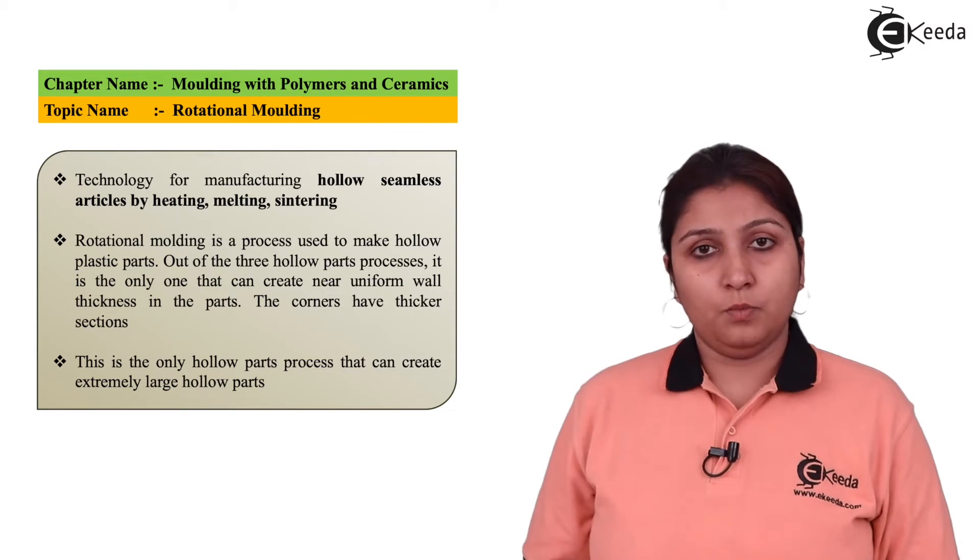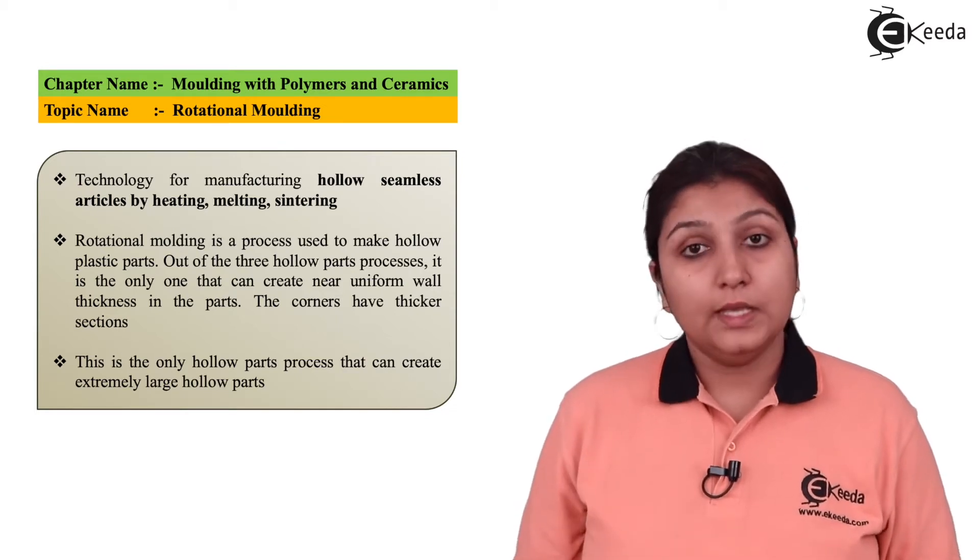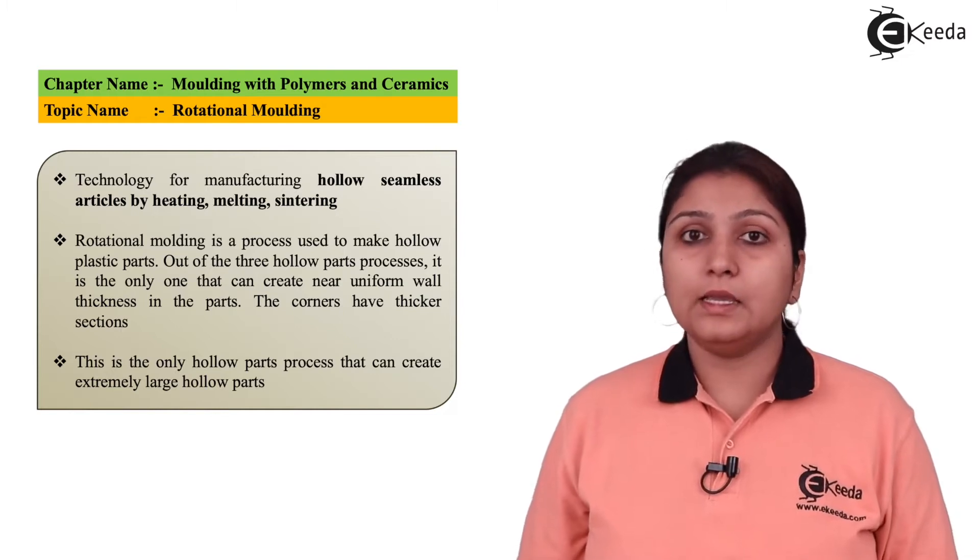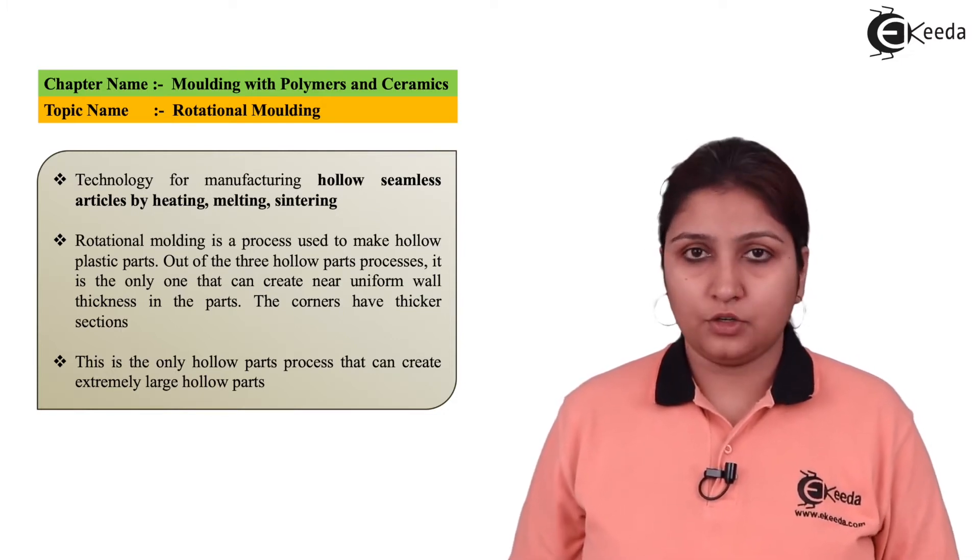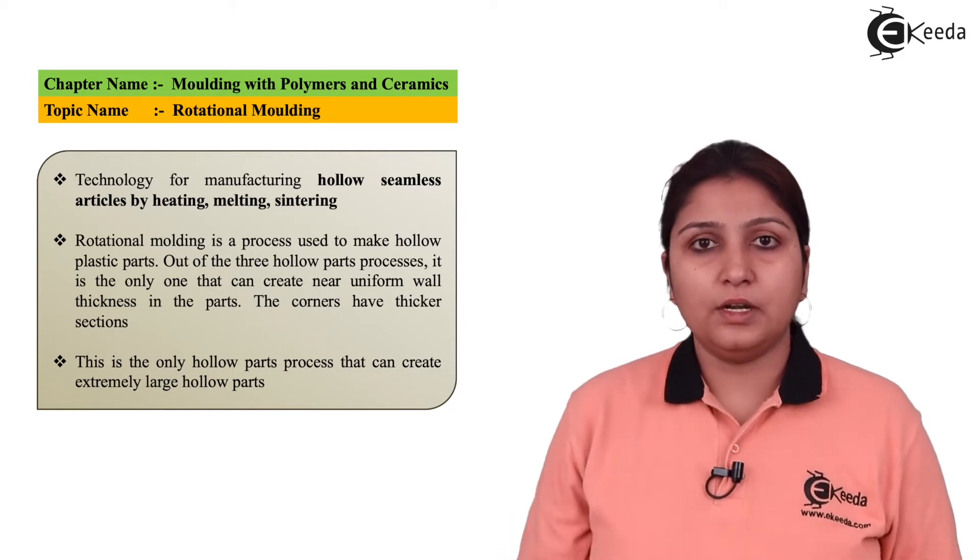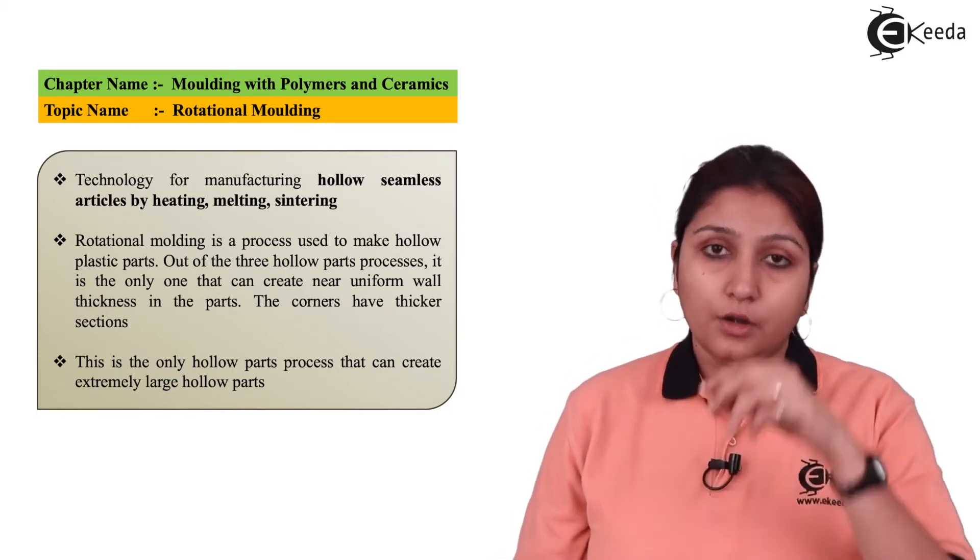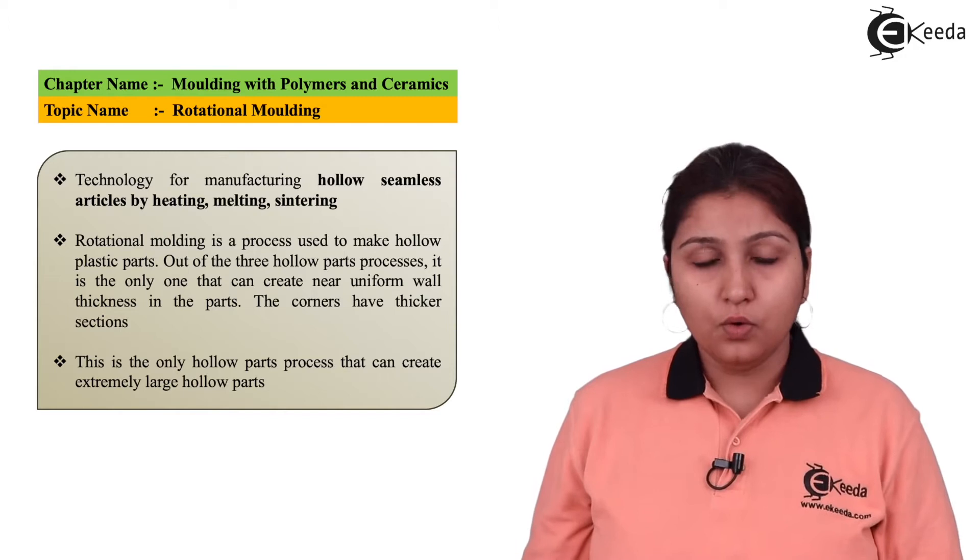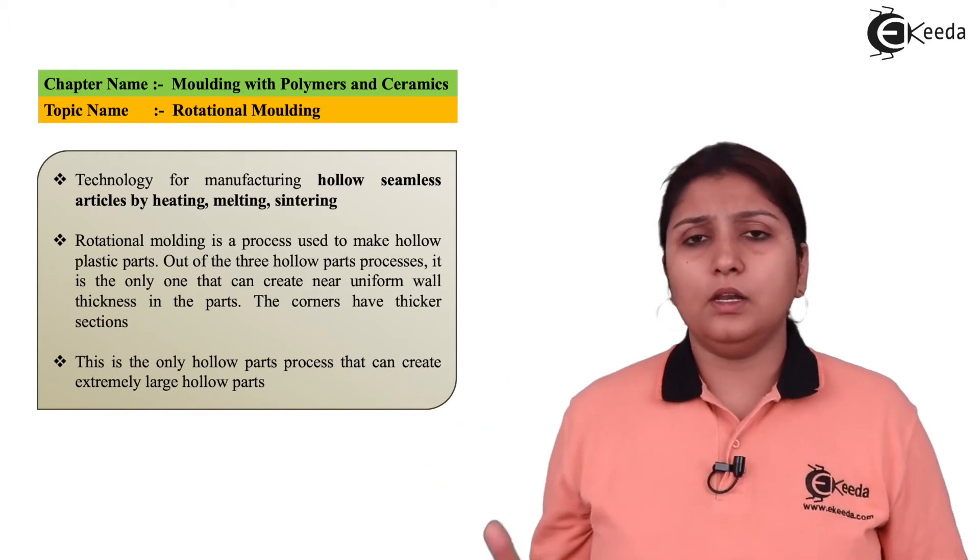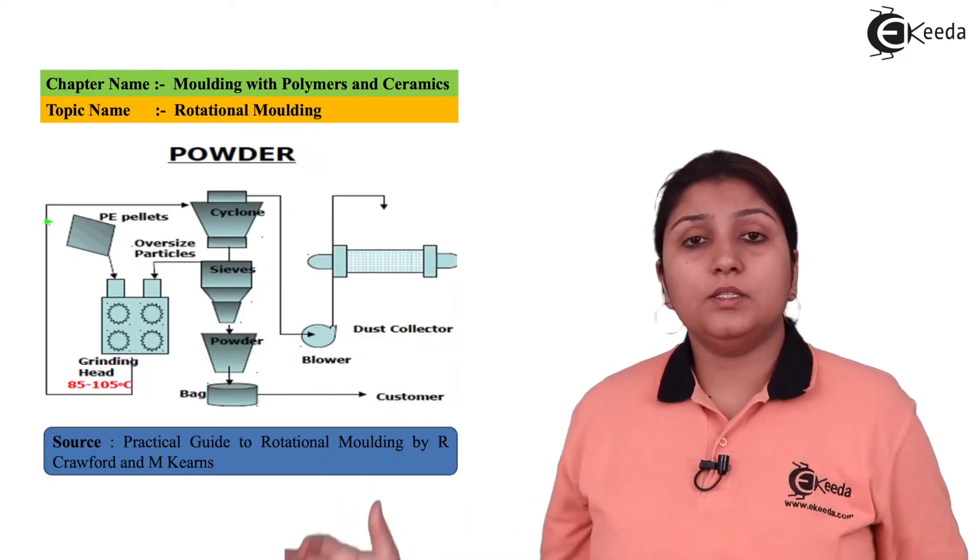In rotational molding, hollow seamless articles can be made through melting, heating, and sintering action. A rotational device is used which rotates to create these hollow and seamless objects. This process is generally used for producing hollow products.